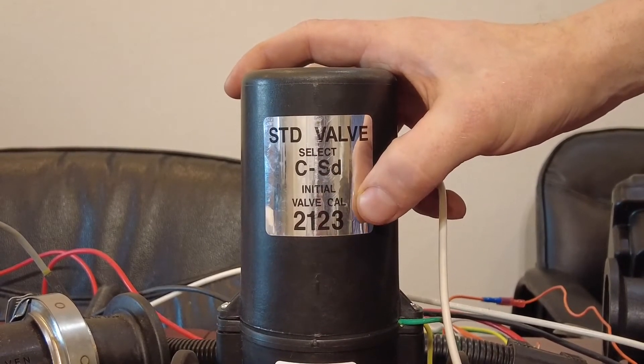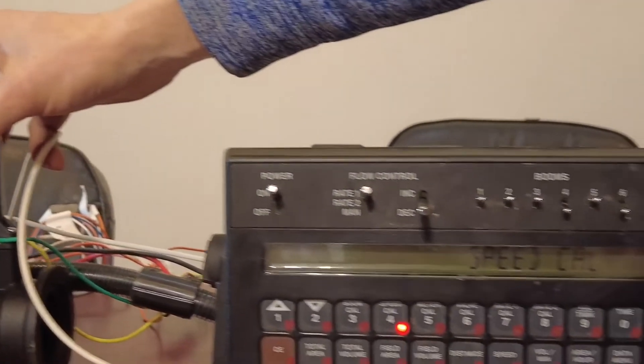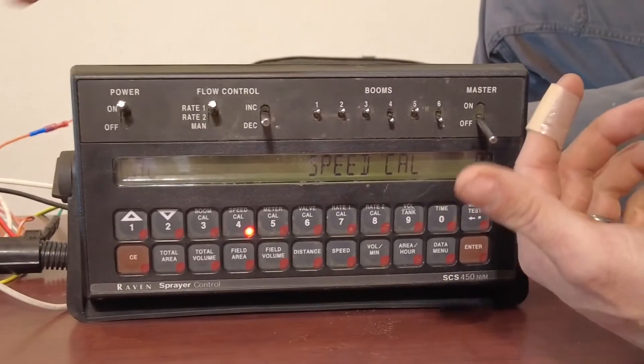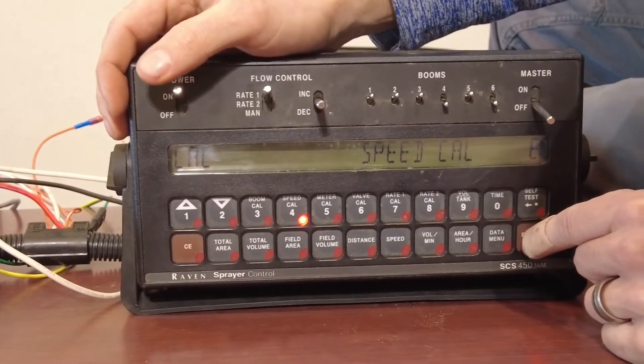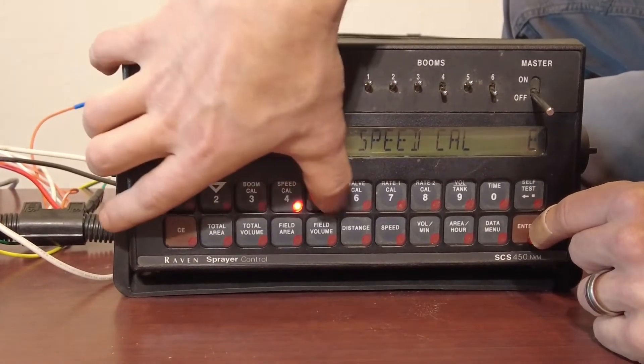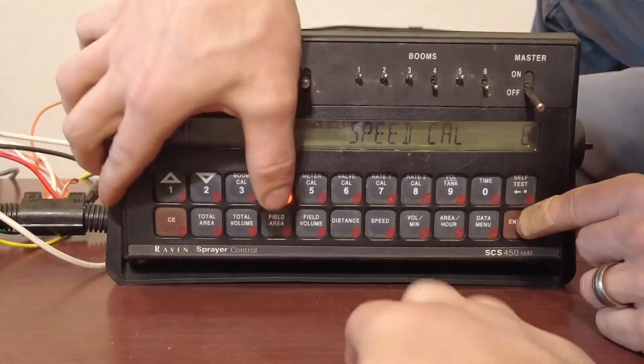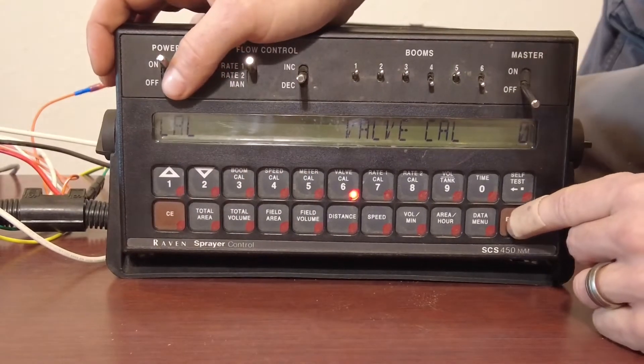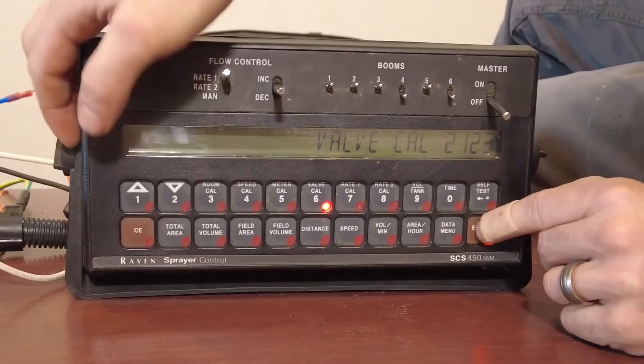That's going to be true for all standard valves using a raven. Now, if you were a PWM valve, it would be 43. If it were a fast valve, it would have the sticker on there, maybe 743. So we're going to hit enter. Oh, I'm sorry. We're actually on speed, but let's do valve right now. So we'll go over here to valve cal. So we just determined that it is 2123 valve cal.